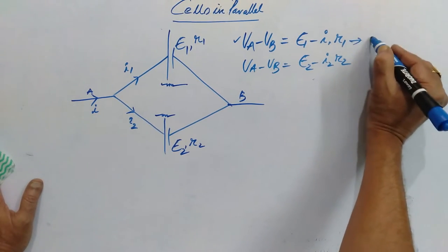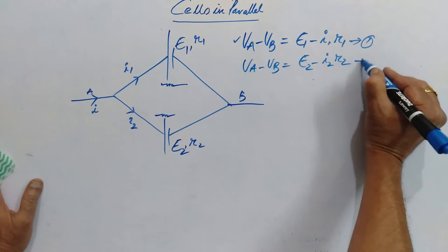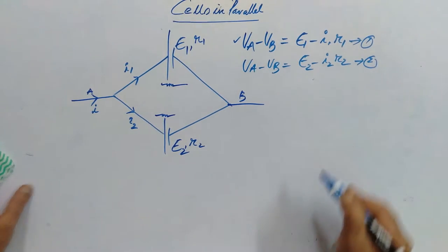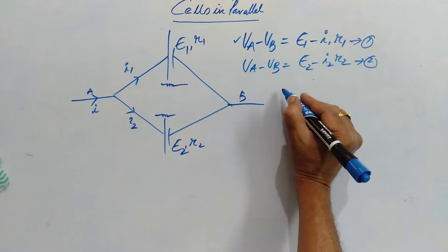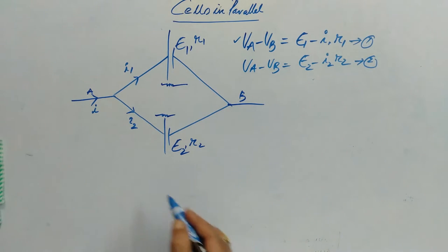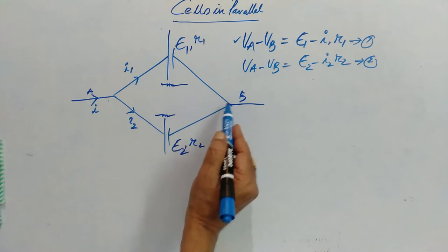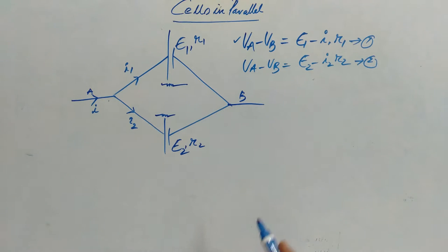So, this is first equation. This is second equation. Now, we know that if you consider VA minus VB as V